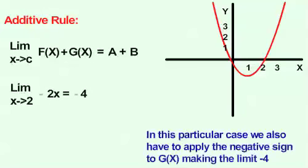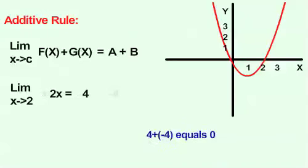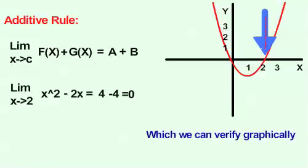In this particular case, we also have to apply the negative sign to g of x, which would make the limit negative 4. 4 plus negative 4 equals 0, which we can verify graphically.